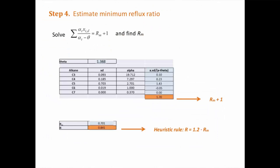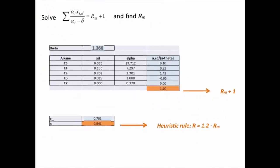Now, with the second Underwood equation, we can determine the minimum reflux ratio. To determine the operating reflux ratio, a heuristic rule says that this value should be 1.2 times the minimum reflux ratio.